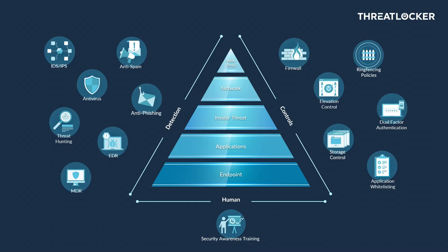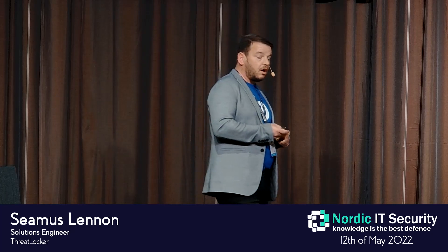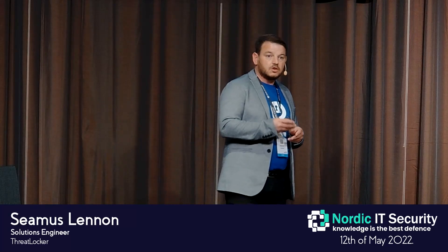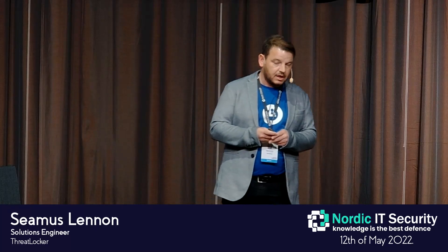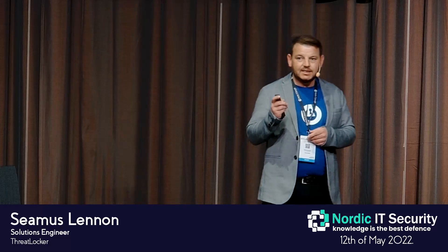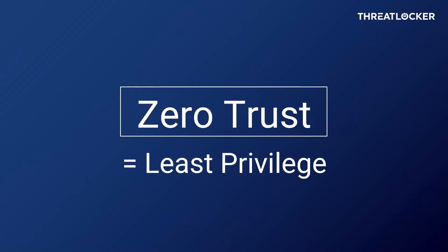What ThreatLocker does to implement these controls is add another layer to the control side. Application whitelisting: control the applications that you trust in your environment and deny everything else. Ring fencing: of those applications you have allowed, control what they can and cannot do — don't let them do everything. Storage control: control your data and what applications have access to your data. And privileged access management — elevation control: remove those local administrative accounts from your environment completely. This is a zero trust approach — least privilege. We're going to give each user and each application the least amount of privileges they need. The less privileges, the more we've reduced our attack vector.